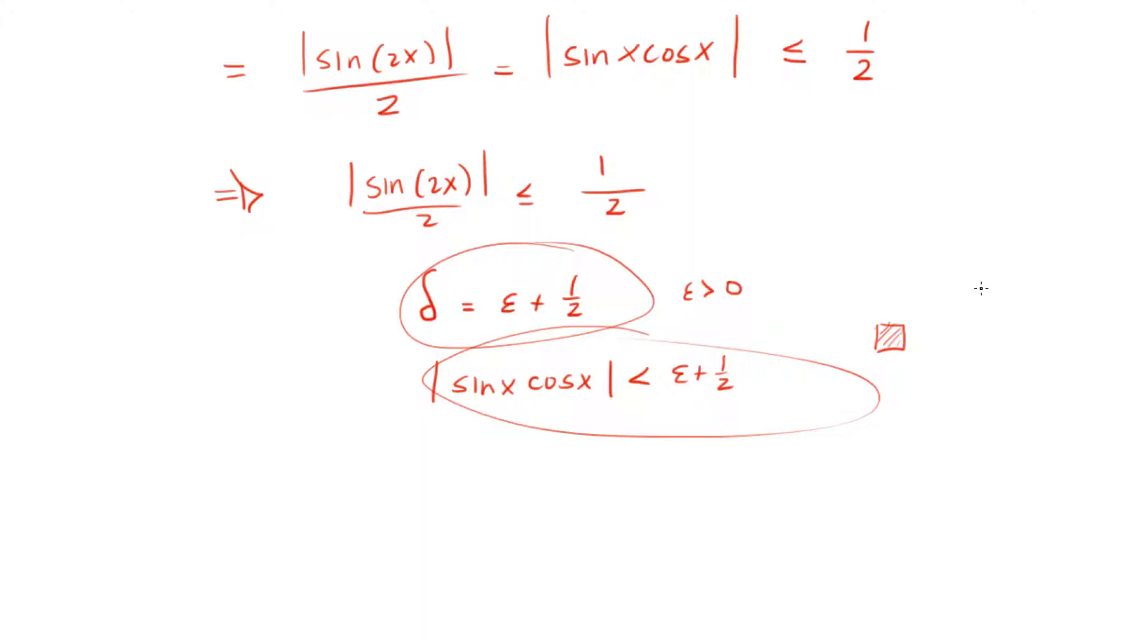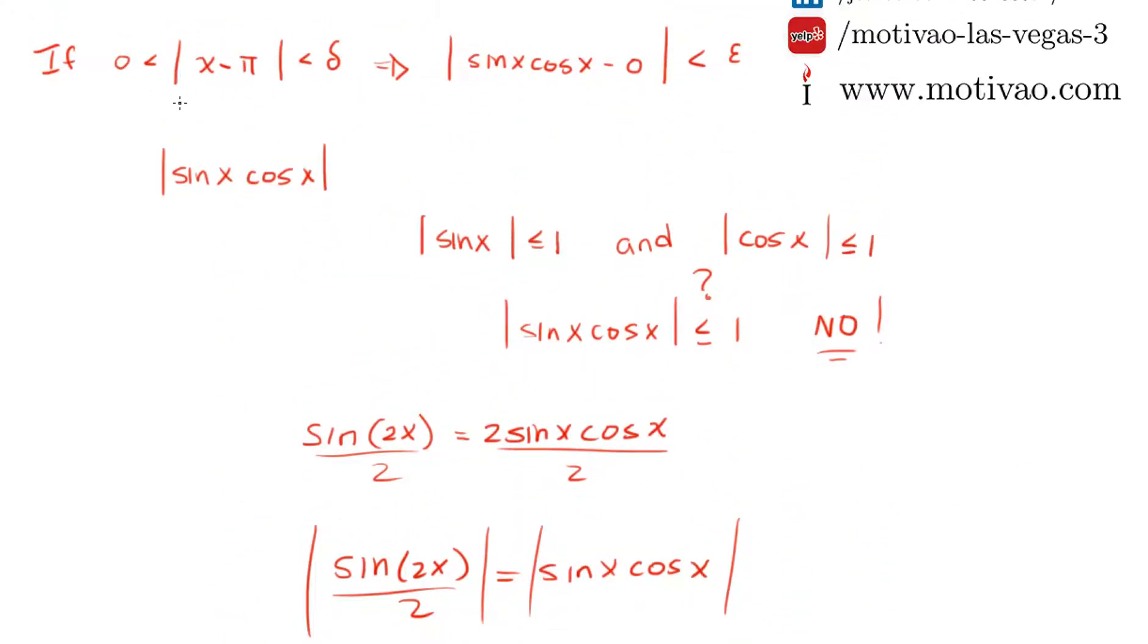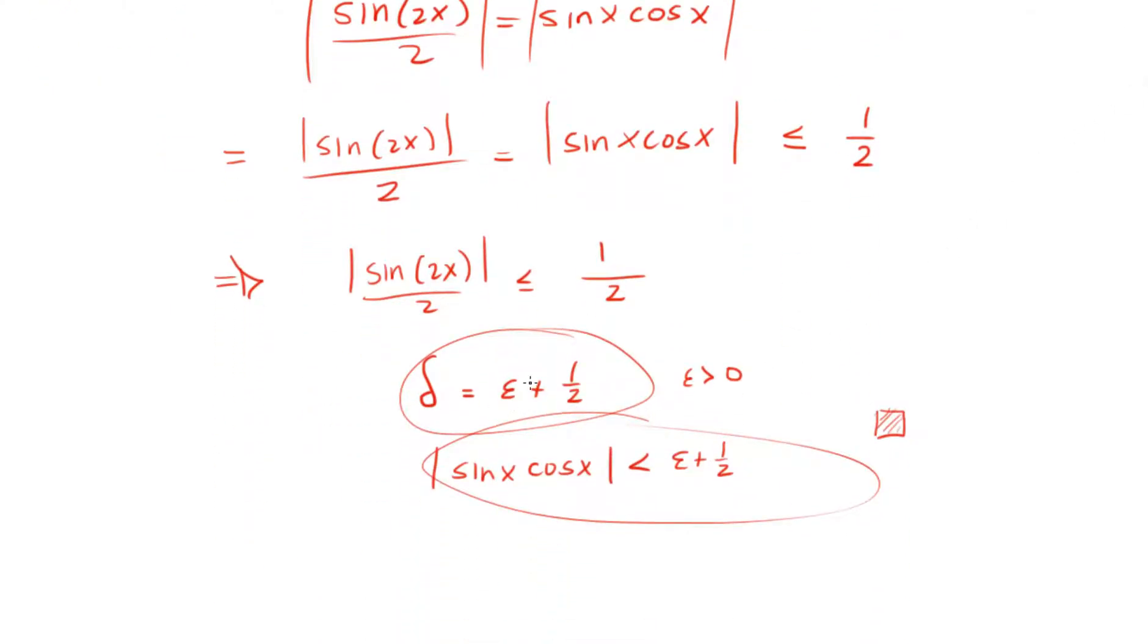Notice that for this problem, we do not need this condition because this inequality is always going to be less than or equal than 1 half for any x. Therefore, if we choose something a bit bigger than 1 half, we will always have the inequality being strictly greater.